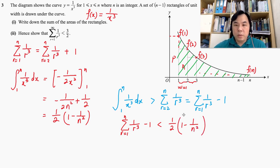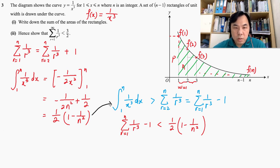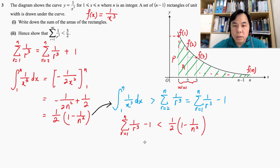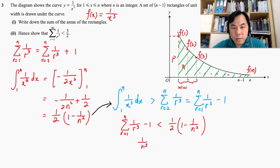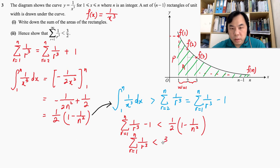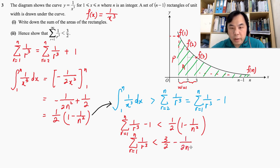Therefore, we can restructure this. We have found the result of the integration, so we can conclude that the summation of 1 over r cubed must be less than the integration result. Moving the 1 across, we get that the sum from r equal to 1 to n of 1 over r cubed must be less than 3 over 2 minus 1 over 2n squared. This result is very important for us to finalize the proof.